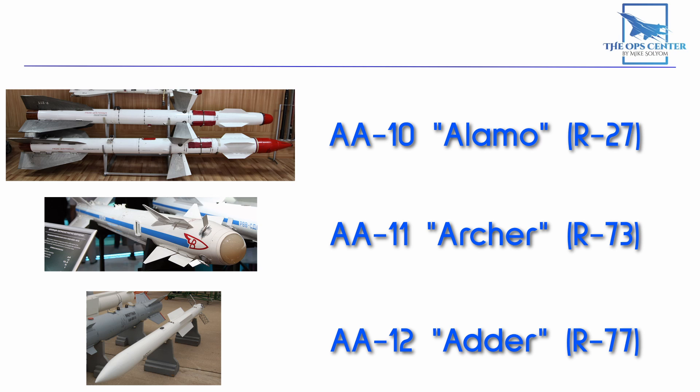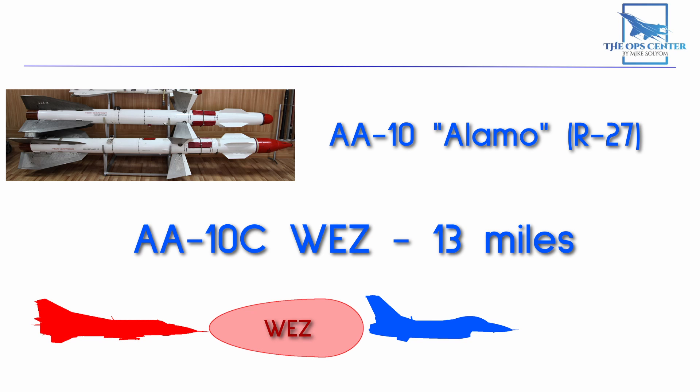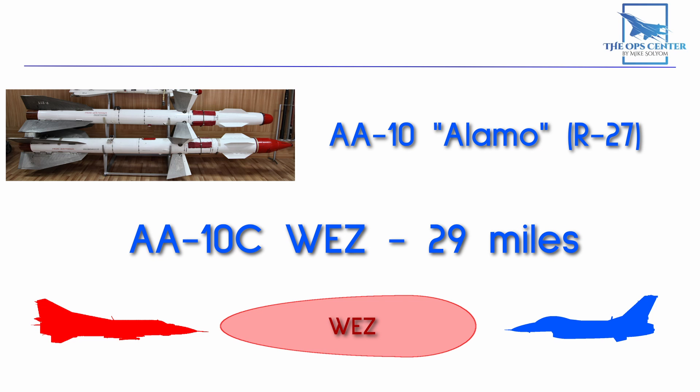Out of all these missiles, the AA-10C has the longest range in our sim, so we'll focus on that one. In the intro video for this series, we used 13 miles as the WEZ for the AA-10C since that was the longest range available for a stern shot. For a shot taken from the target's forward arc, that range would go all the way up to 29 miles.